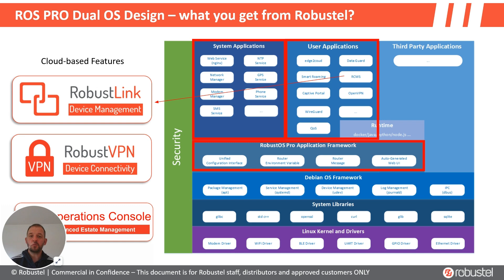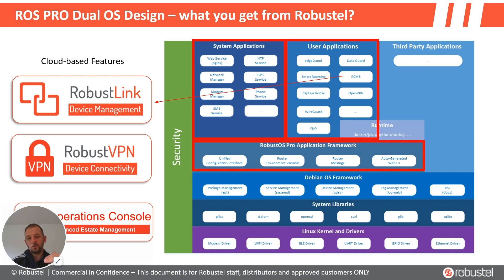You get the best of both worlds. One of the challenges with this setup is there can be conflict between third-party applications and the native router operating system. There's some clever disambiguation of who's going to own the resources for different applications, so there's generally always a way to solve that problem. The product itself, which we refer to as a dual operating system, has big benefits when combined with Robustel's cloud management platform.